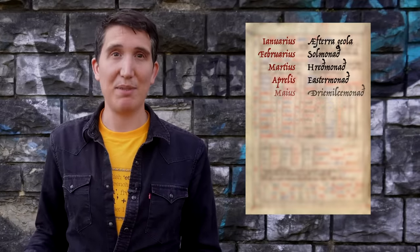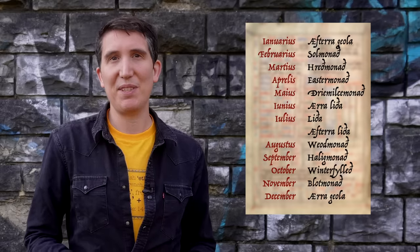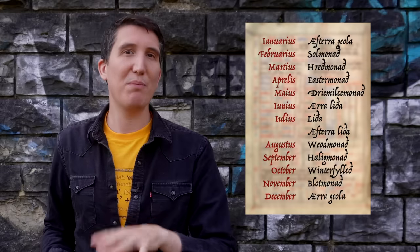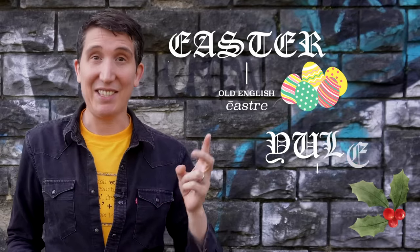Already during the Old English period we see the Roman names for the months appearing — the names we still use today. The monk the Venerable Bede, the source for so much of our knowledge of Old English, lists these names alongside the Anglo-Saxon pre-Christian names for the months, but the Roman months eventually displaced those altogether. Only the ones that managed to find a new place within Christianity managed to survive: Easter and Yule.